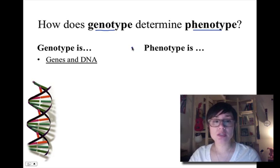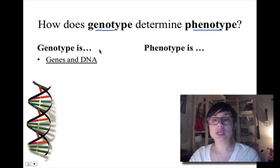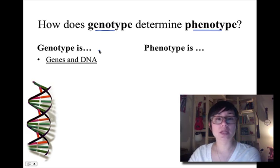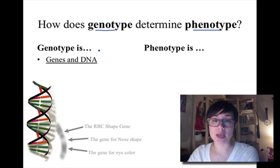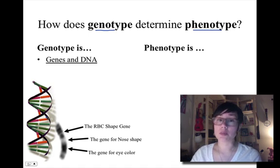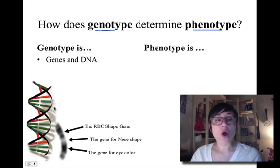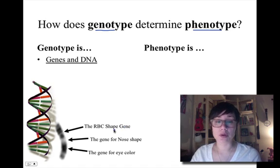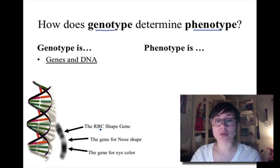Genotypes refer to genes or DNA. These are things that you cannot see by looking at someone, but we know they're important because they tell the body what needs to be made. Here's an example in this picture. This is my piece of DNA — everybody should know that this is DNA because it's a double helix and it has two strands. On this DNA we have a gene, which is basically a piece of DNA that codes for a protein that controls, for instance, the shape of a red blood cell. It determines whether you have normal red blood cells or something like sickle cell anemia.